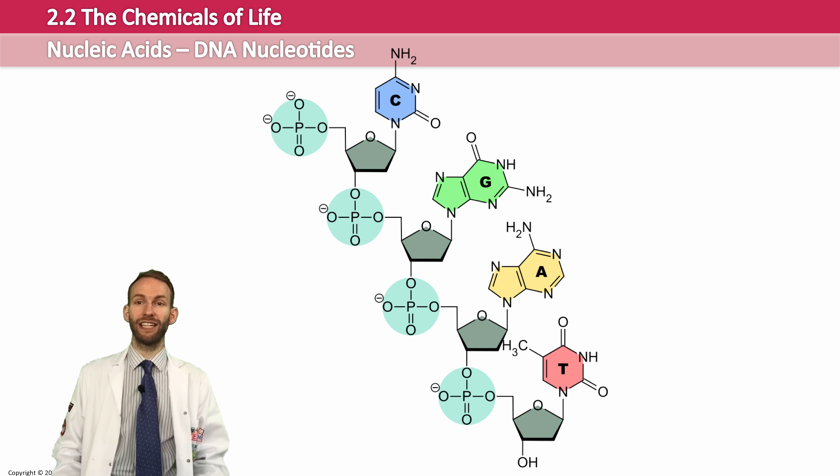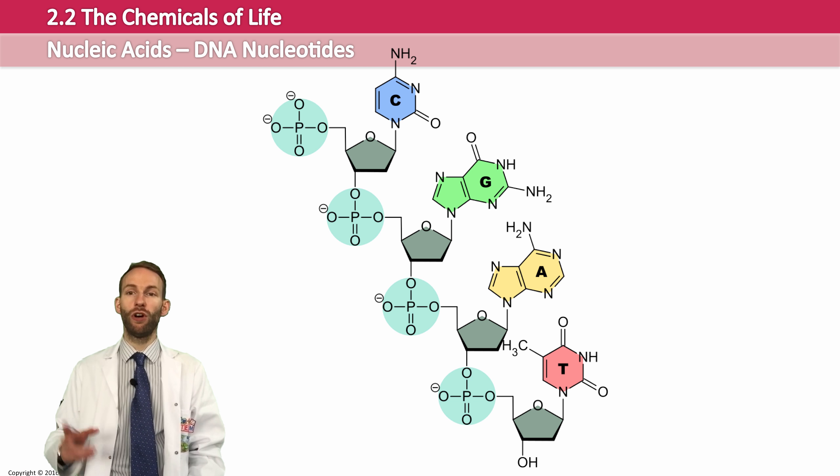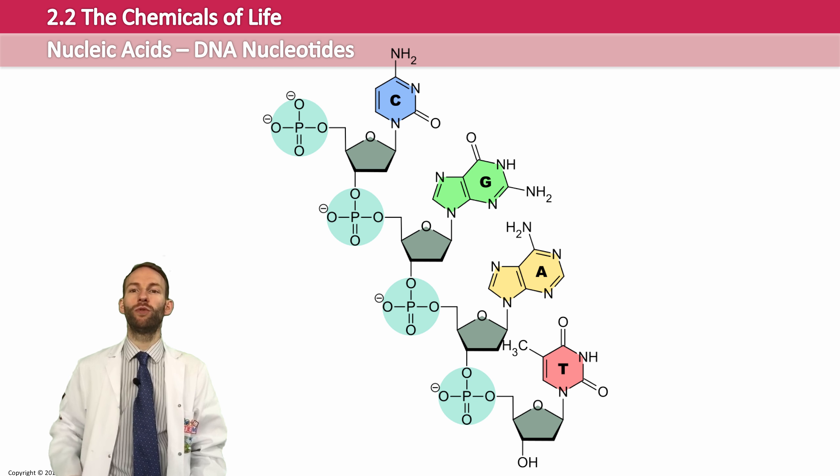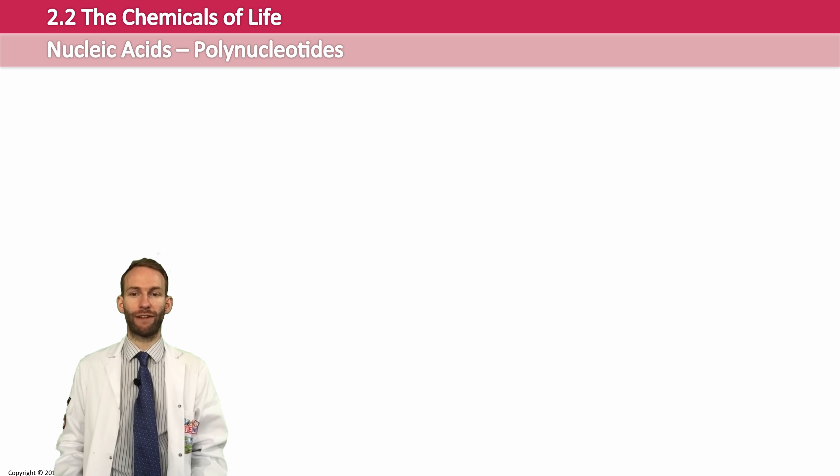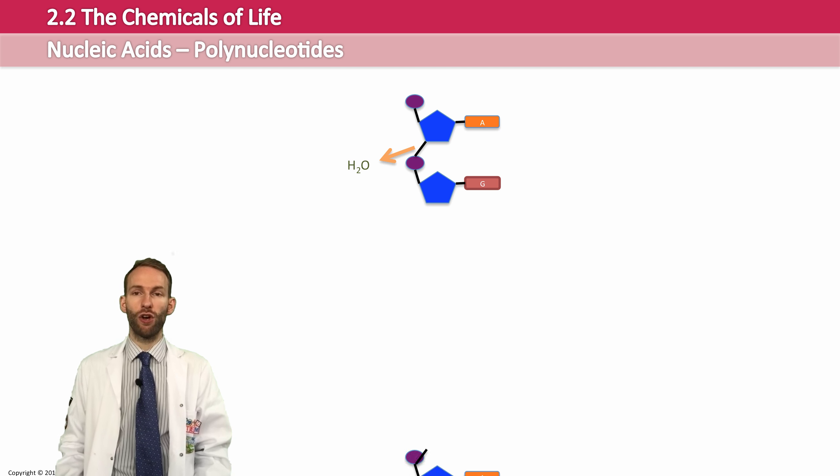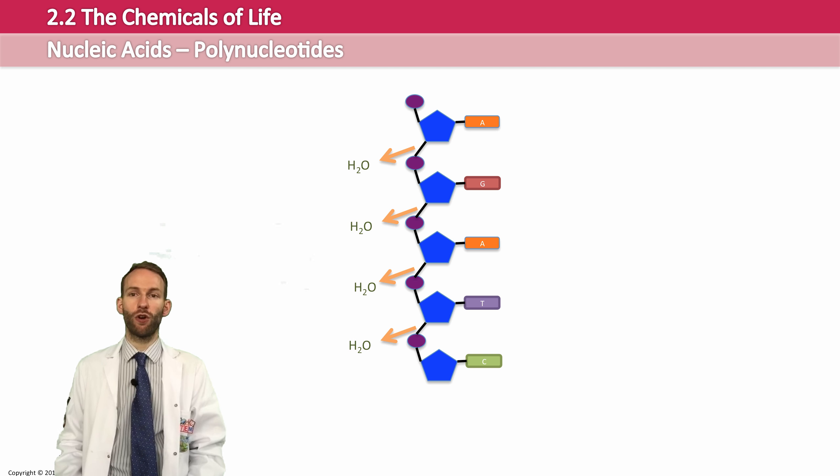Each nucleotide is linked to the next nucleotide by a condensation reaction. Just like condensation reactions that we've seen before, this is a reaction to make a bond, a covalent bond, which will remove water. The bond formed, in this case, is called a phosphodiester bond. So, when you join lots of nucleotides together with lots of condensation reactions and make these phosphodiester bonds, we end up with a polynucleotide, or a nucleic acid.